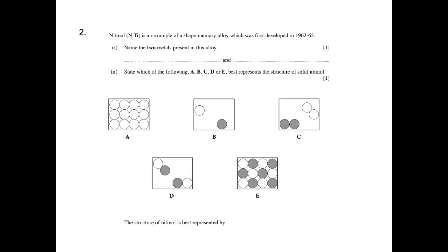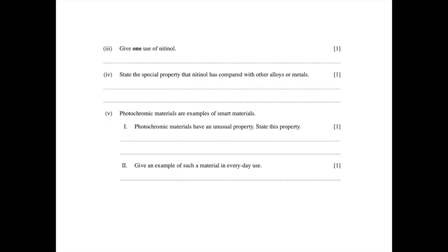So now pause the video and have a go at question two. We want you to name the two metals present in nitinol, and then look at the diagrams and suggest which one best represents nitinol. The second part asks you to give one use of nitinol, then state the special property that nitinol has compared with other alloys or metals, and finally state the unusual property that photochromic materials have and give an example of such material in everyday use.